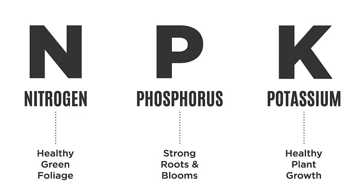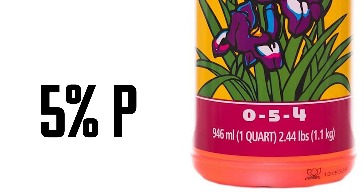Phosphorus not only assists in upper development with your fruit and vegetables through energy production, but it also helps create strong, hardy root systems — that's really where phosphorus stands out. You do need phosphorus the entire time because of that ATP production. However, when you get to the fruiting stage is when you're going to need a ton of it — your plant will lean a lot more toward needing phosphorus then.